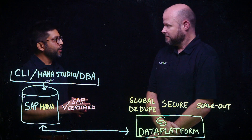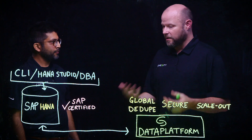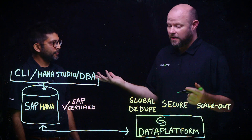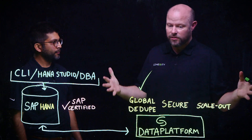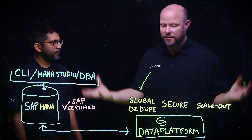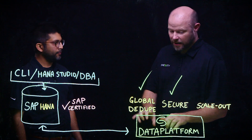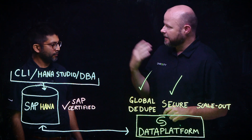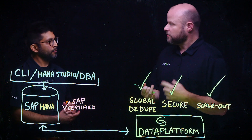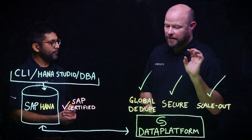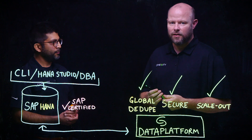In summary, from a Cohesity perspective, we can enhance the SAP HANA configuration, deployment, and backup with things like global deduplication. We can globally dedupe across multiple sites and multiple silos, consistently giving you a globally efficient data set. We can apply security across multiple data centers, multiple sites, and multiple SAP instances. And from a scale-out perspective, instead of scaling up and adding different storage instances, we can scale out and grow your entire infrastructure as you need for an SAP instance.